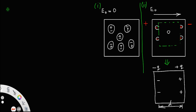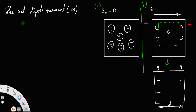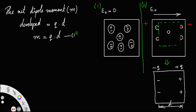So the net dipole moment — let us represent dipole moment using the letter m — the net dipole moment developed is equal to q into d, that is dipole moment m equal to q times d. Let us call this as equation number one.